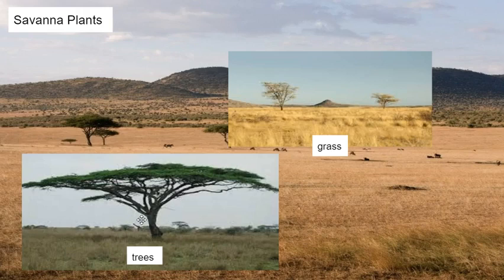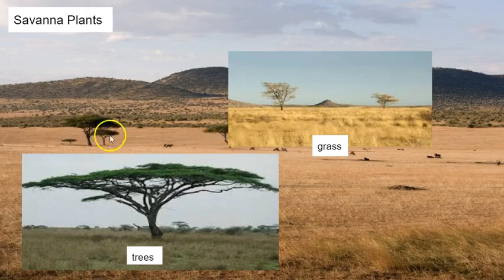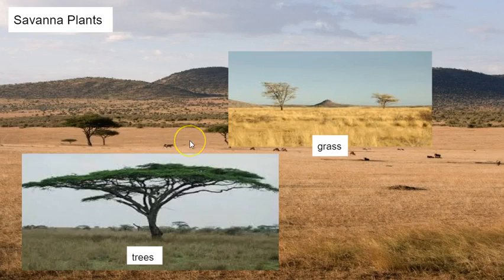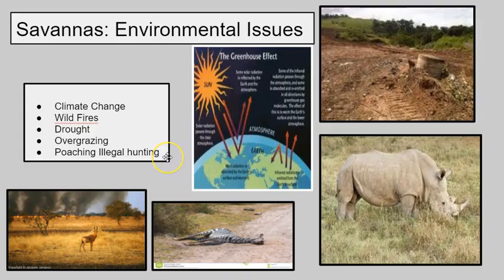Trees are what make the Savannah different from our temperate grassland. If we look in the background here, it shows a wide plain filled with dry grasses and those few sporadic trees that pop up here and there. This is a great depiction of a Savannah biome.